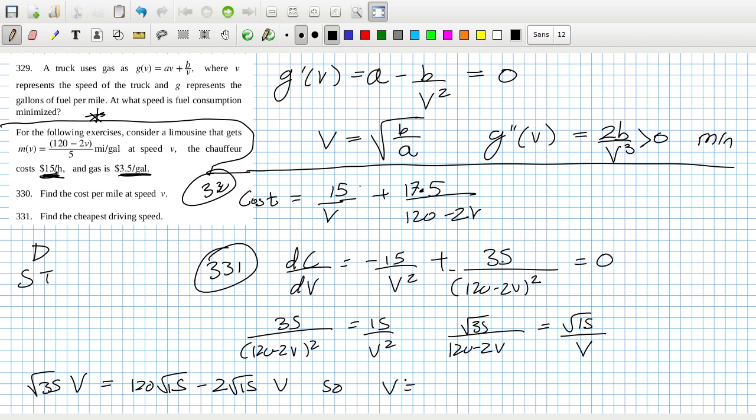So root 35 v equals 120 root 15 minus 2 root 15 v. And so v equals, okay, 120 divided by... 34.0, 34.0. Yeah, so 34, roughly 34 miles per hour.